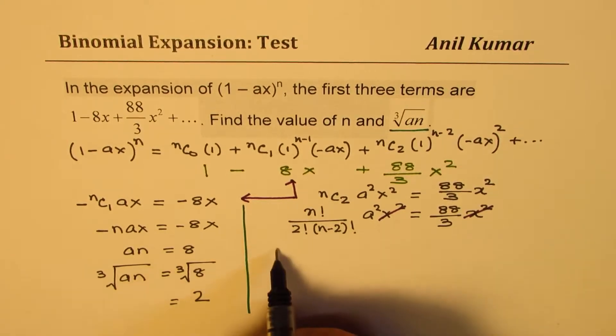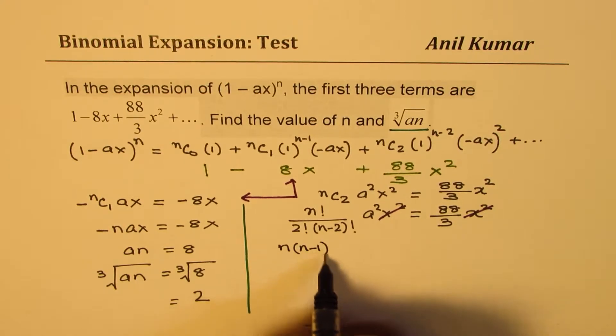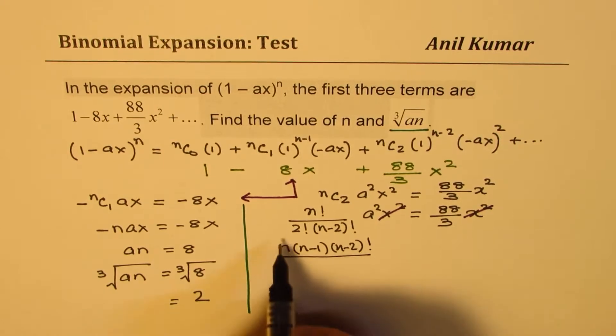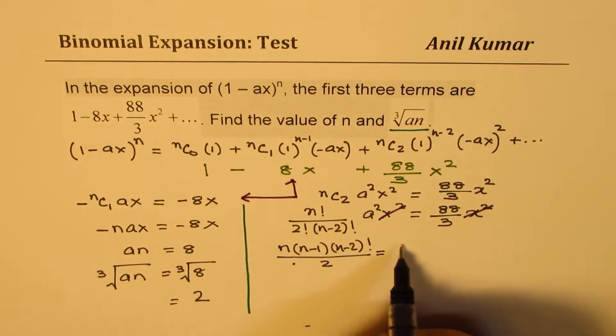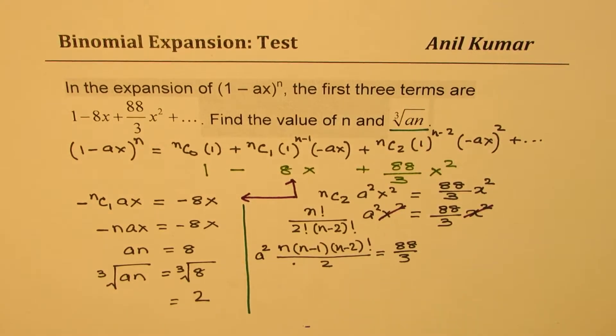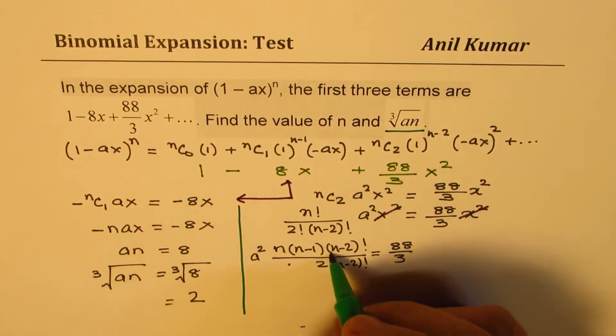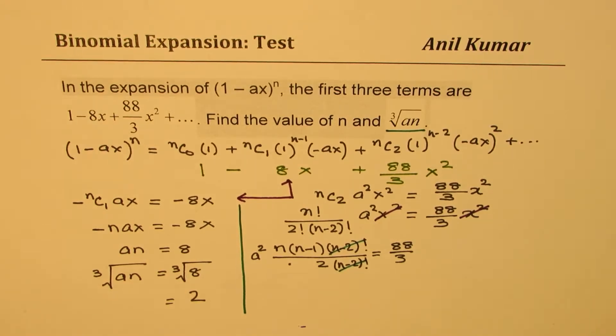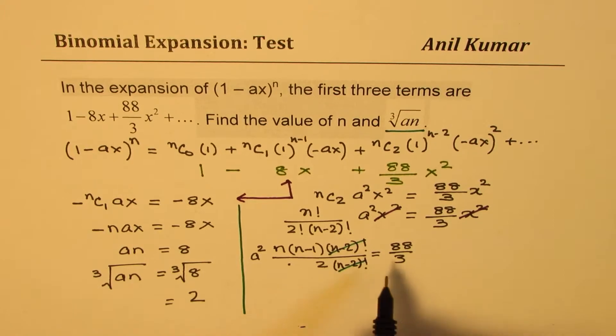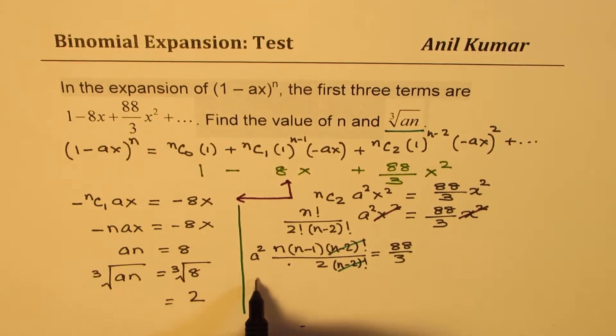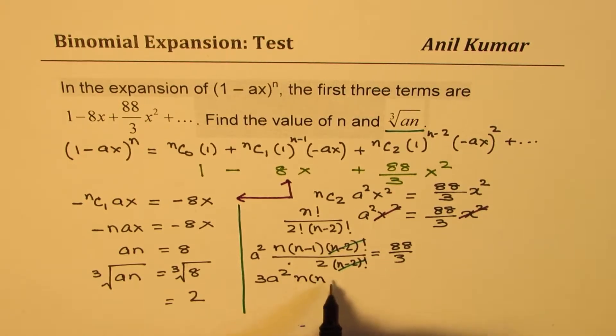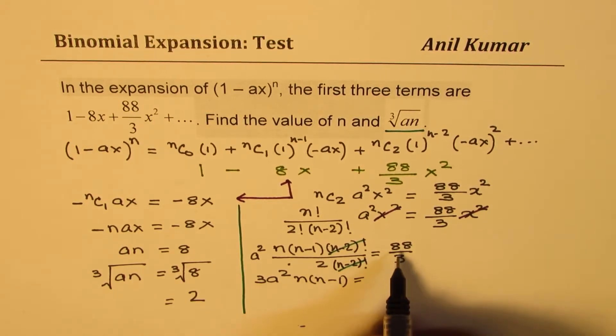We can cancel x² and x², so we get the terms A and n. Let's simplify this part, which can be written as n(n-1)(n-2)! over 2(n-2)!. The (n-2)! cancels, so we're left with these terms. We can cross-multiply and get 3A²·n(n-1) = 2 × 88 = 176.